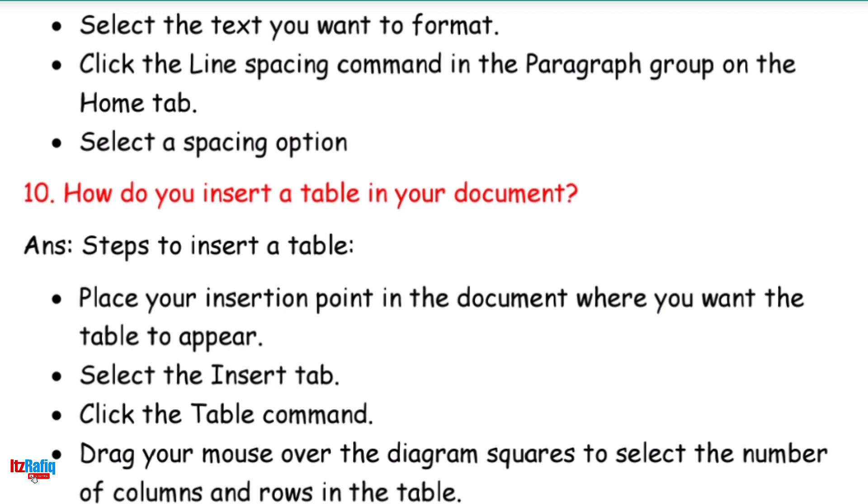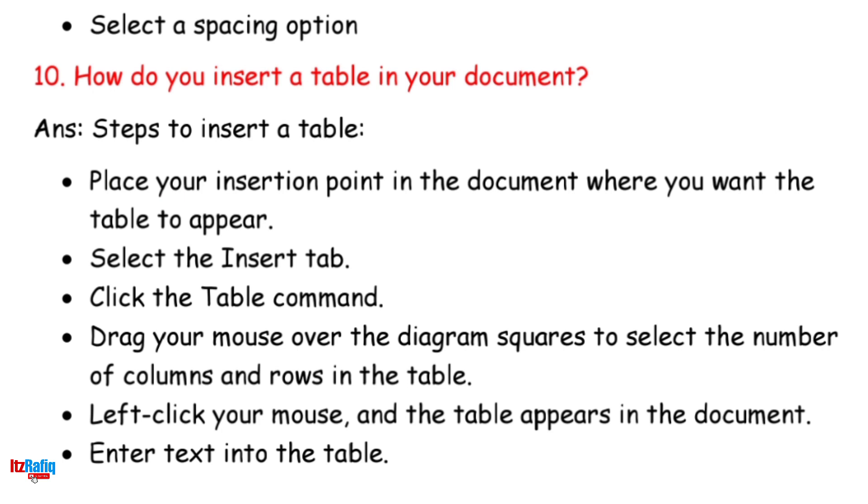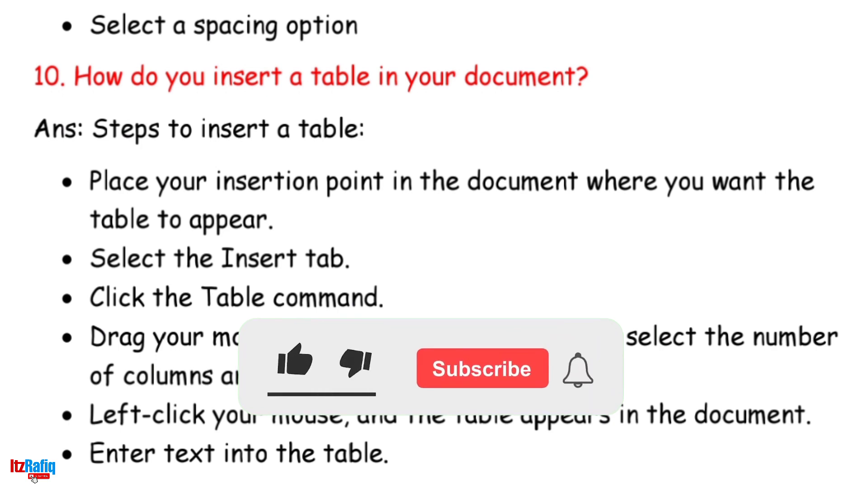10. How do you insert a table in your document? Answer: Steps to insert a table. Place your insertion point in the document where you want the table to appear. Select the Insert tab. Click the Table command. Drag your mouse over the diagram squares to select the number of columns and rows in the table. Left click your mouse and the table appears in the document. Enter text into the table.